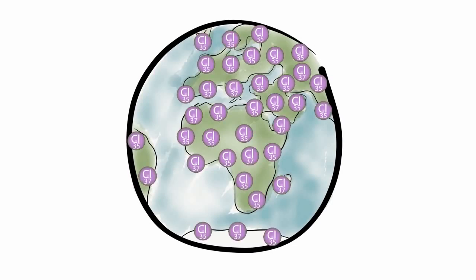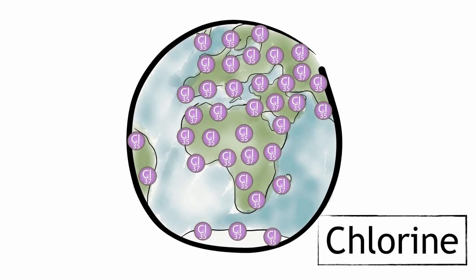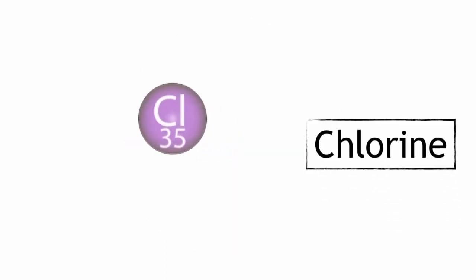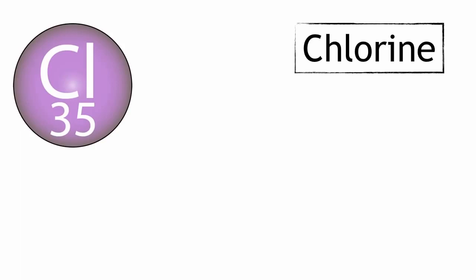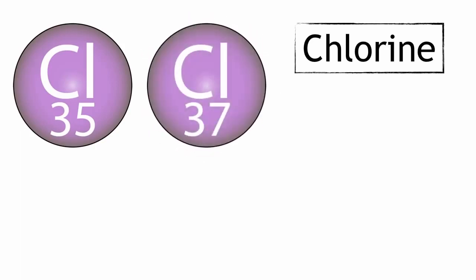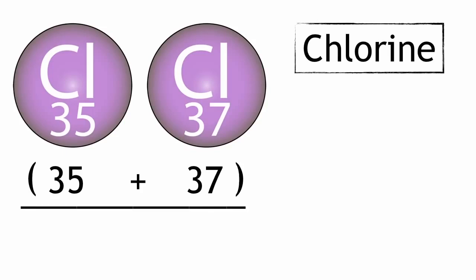For example, let's look at the isotopic forms of chlorine. Some chlorine atoms have a mass of 35, and some have a mass of 37. In most cases, to take a simple average, you would just add the values together and then divide by the number of values. In this case, it would be 35 plus 37 divided by 2, and you would get an average of 36.